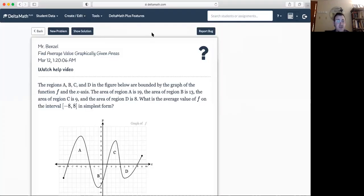All right. Our very first example here, example one, is find the average value graphically given areas. We have regions A, B, C, and D in the figure below. Region A is 19. Region B is 13, but since it's below, I'm going to call that negative 13. The region of C is 9 and the region of D is negative 8.